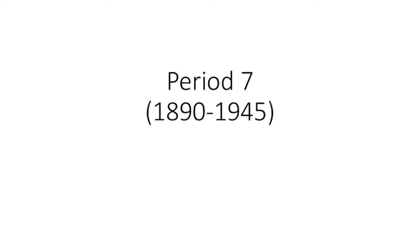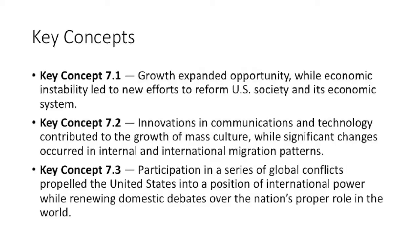Sometimes 1901 to 1920 is the progressive era because that's the election of Teddy Roosevelt. Progressivism really starts at the state level and then reaches the federal level with Teddy Roosevelt. The three key concepts are 7.1, 7.2, and 7.3. 7.1 talks about efforts to reform society and the economic system — the Populists, the Progressives, and Franklin Roosevelt and the New Deal all tried to do this.